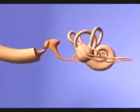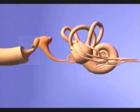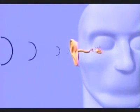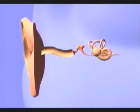The auditory system consists of several components: the external ear, the ear canal, the eardrum, auditory ossicles, cochlea, and the auditory nerve. Ambient sound waves are collected by the external ear, conducted through the ear canal, and cause the eardrum to vibrate.